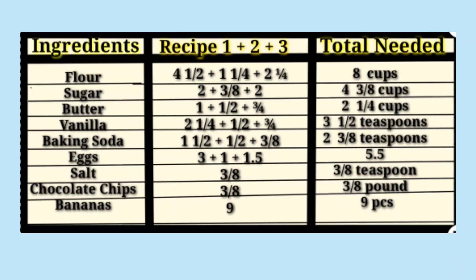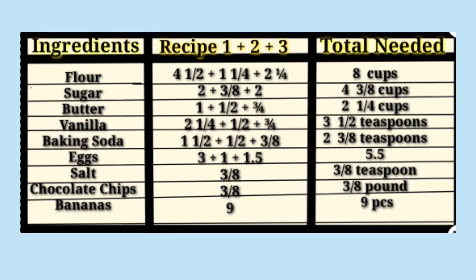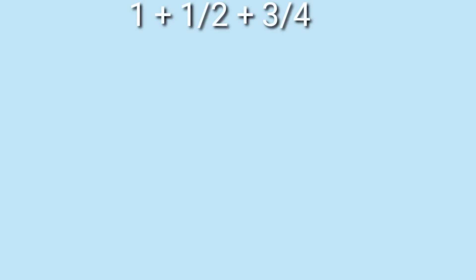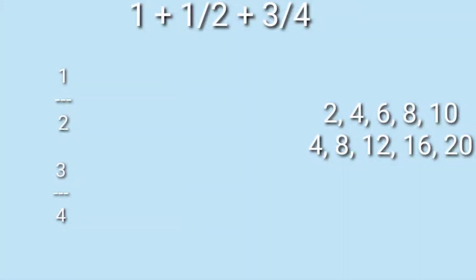The next ingredient is butter. From banana bread, we have 1 cup of butter; from chocolate chip cookies, 1/2 cup; and from sugar cookies, 3/4 cup. So now we are going to add 1 plus 1/2 plus 3/4. Let's first add the fractions: 1/2 plus 3/4. The least common denominator is 4.